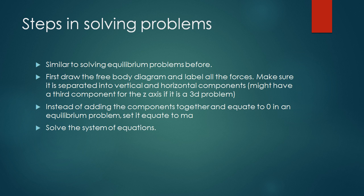Steps in solving these problems. Well, first of all, these are very similar to equilibrium problems that we have went through in previous videos. What to do is, you first need to draw a free body diagram and then label all the forces that are involved. And make sure it is separated into vertical and horizontal components. If it's a 3D problem, it might have something in the z-axis as well. Instead of adding the components together and equate to zero in an equilibrium problem, set it equal to ma, or mass times acceleration, because this is not an equilibrium problem. After that, then you solve the system of equations.